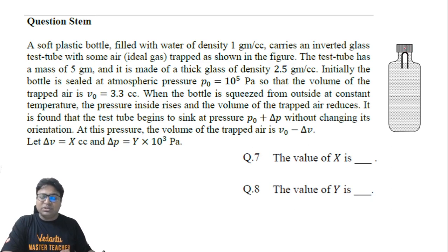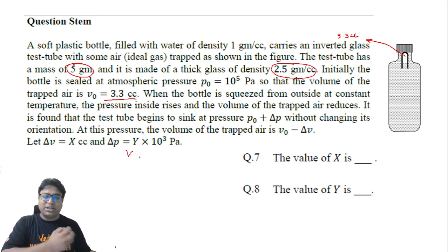So as of now, this test tube is being pressed downward by this lid, so basically normal force exists between the two. Now the question also tells us that right now this volume is 3.3 cc. The question also tells us that the mass of the bottle is 5 grams and the density is 2.5 grams per cc.